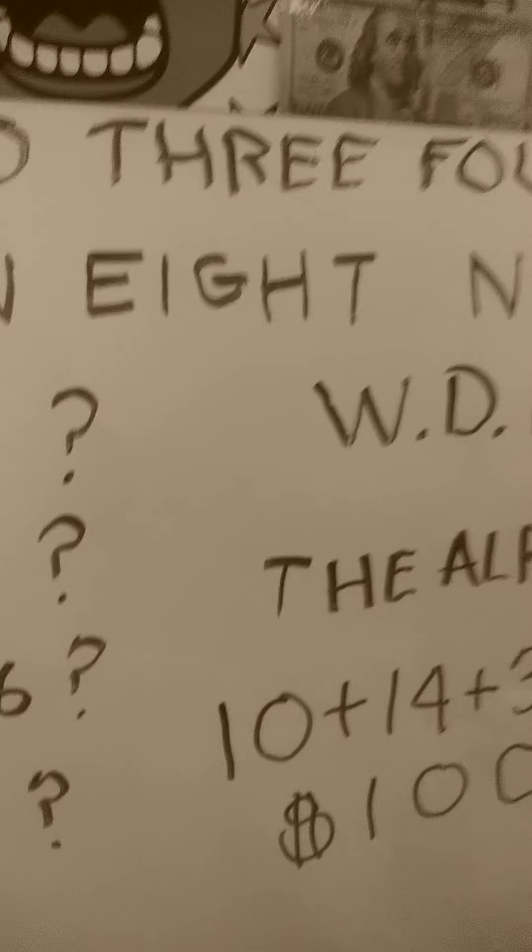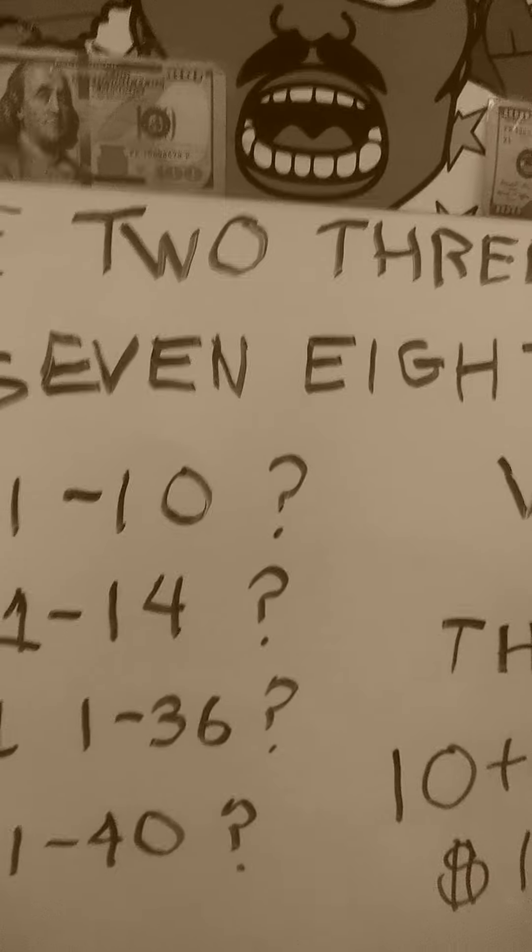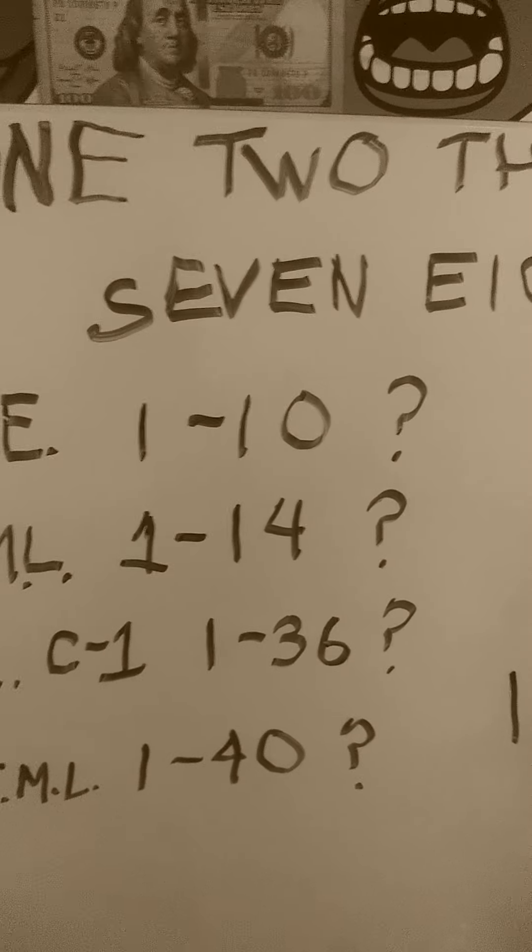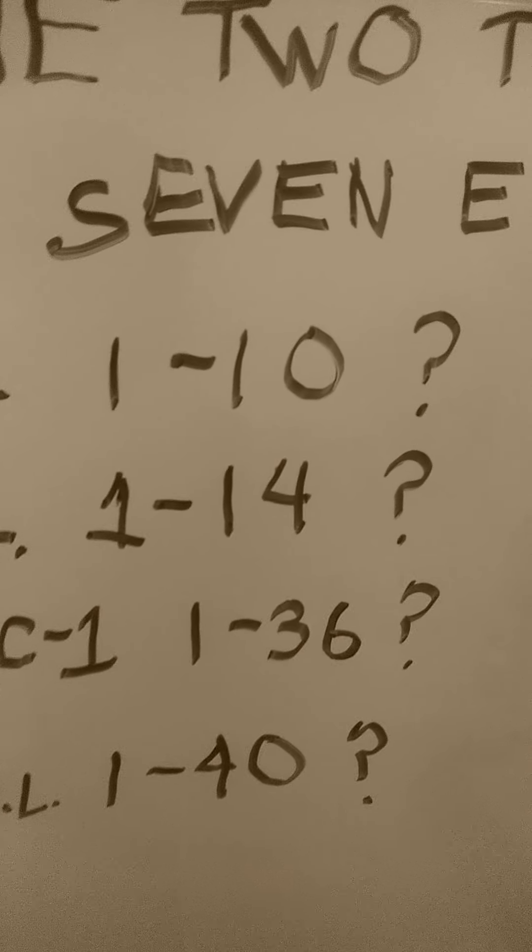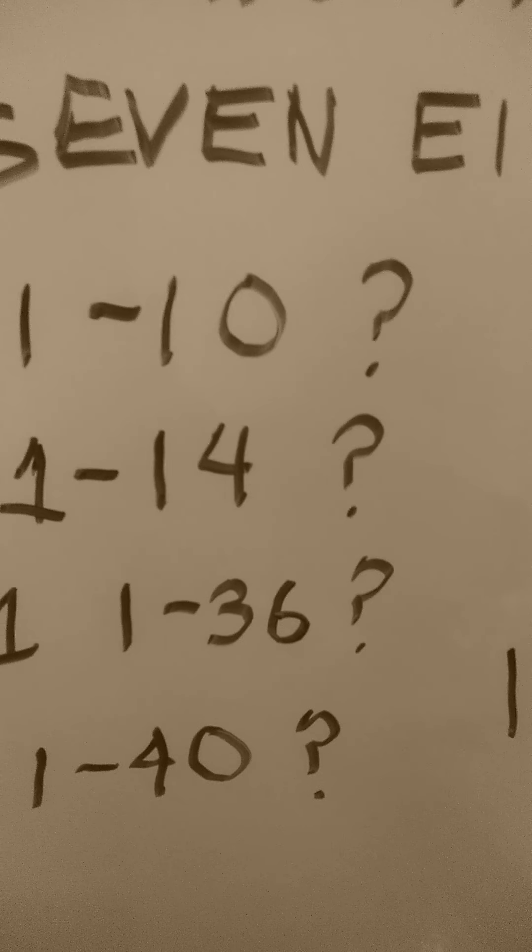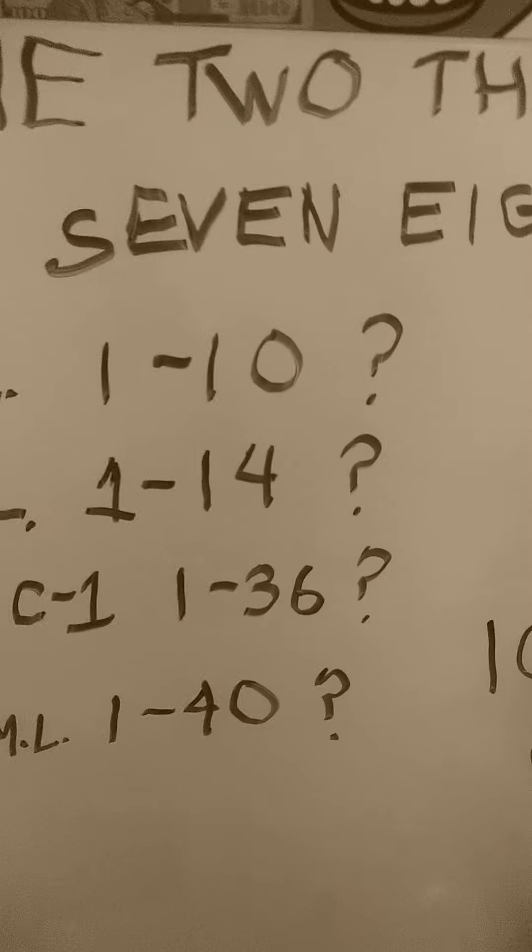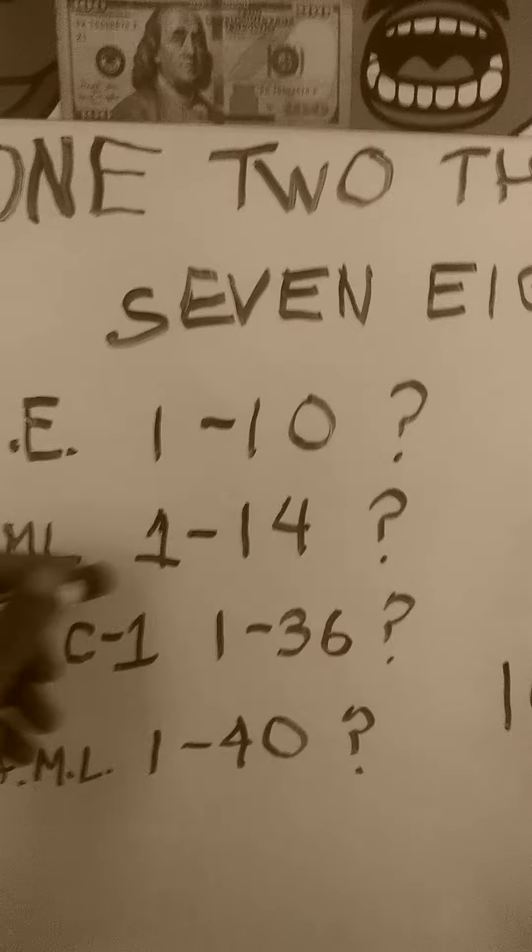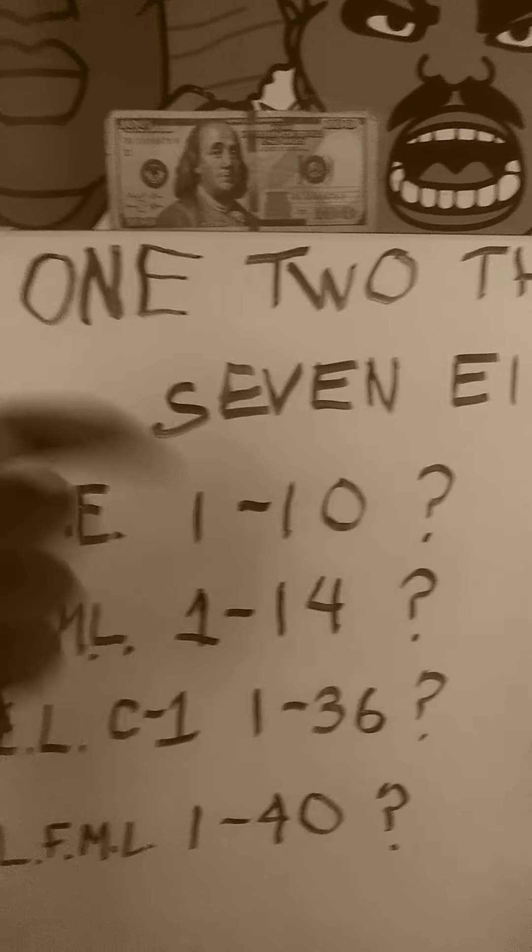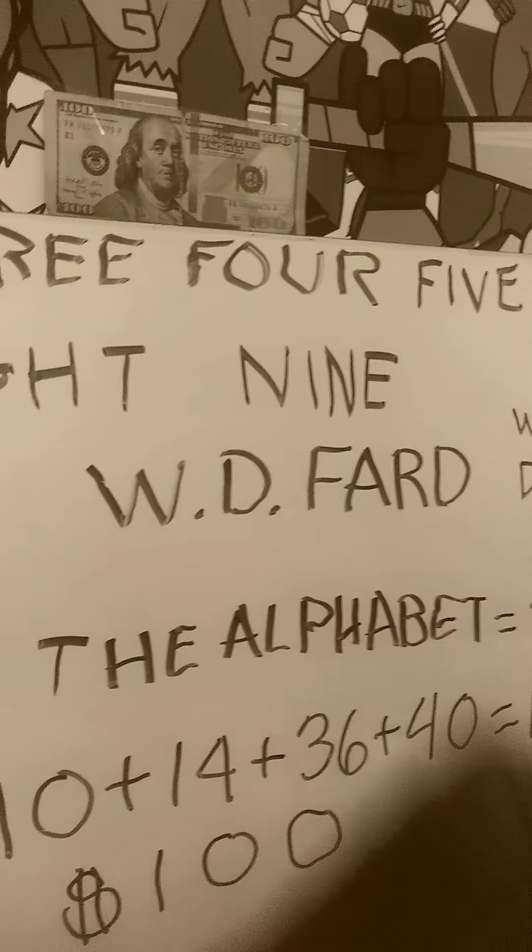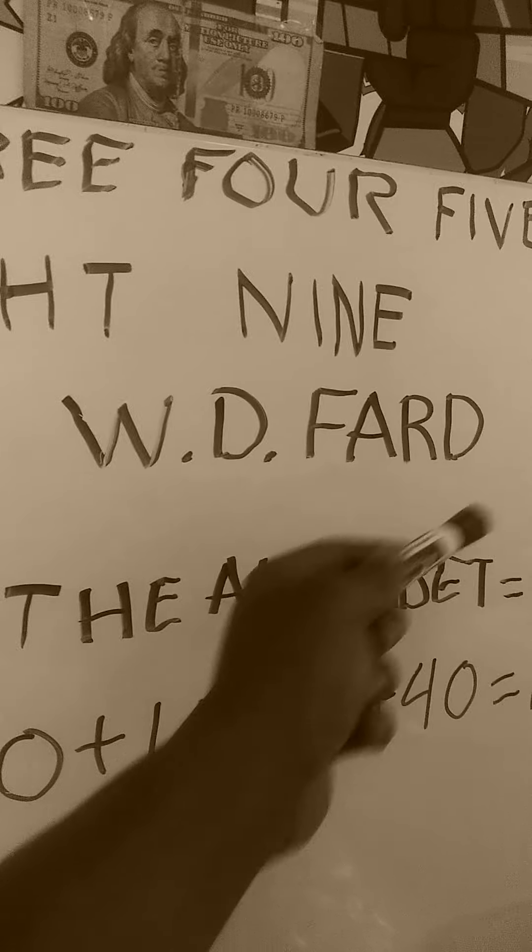See, because based on what I'm talking about, when you strip away the religious jargon and the mythologies that are attached to the mathematics, someone can answer this question that is not even a member of the Nation of Islam. Because the clues are already here. You have 1 to 10, 1 to 14, 1 to 36, 1 to 40. And I said, what does that have to do with the above said nine words that are attached to the nine numbers? We're talking about the teachings of W.D. Farad.